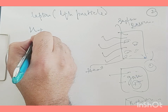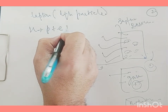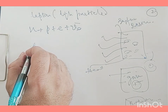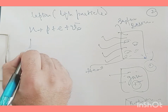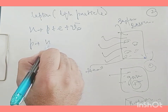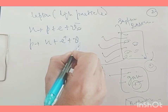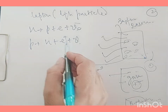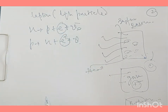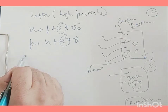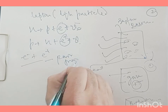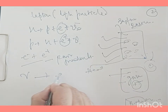In beta decay, a neutron decays into a proton, an electron, and an anti-neutrino. Similarly, a proton decays into a neutron, a positron, and a neutrino. Electrons and positrons can also be produced by the phenomenon of pair production, where a gamma ray photon produces a positron and an electron.